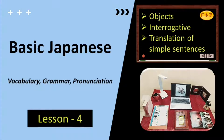Hello, everyone. Konnichiwa. Welcome to this video, which is the fourth lesson of the basic Japanese series for beginners. You will learn vocabulary of a few objects and electronic items commonly present in a room. You will also learn about interrogative sentences in which an answer is to be chosen out of alternatives. And at the end, you will learn how to translate simple English sentences to Japanese. So please watch it till the end.